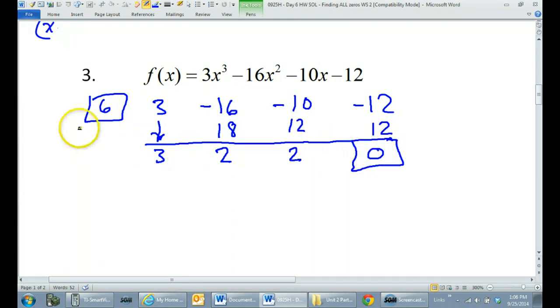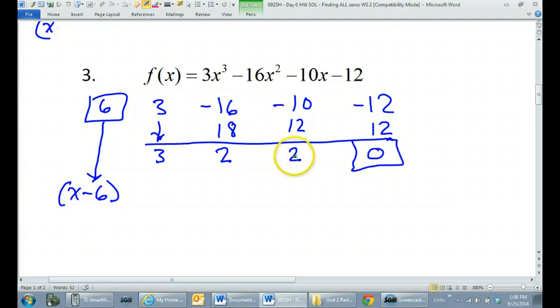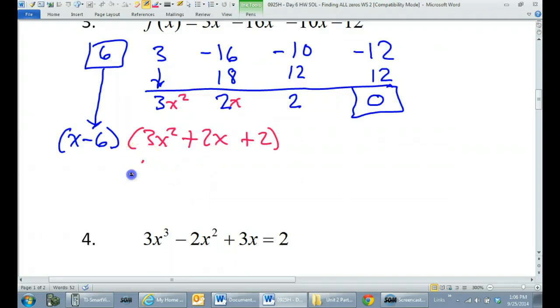We knew that would happen. So, so far, this is what we have. From the zero of 6, we know there will be a factor of x minus 6. Now, if I put the variables back in here, there's an x here, there's an x squared here. That gives me 3x squared plus 2x plus 2. Now, in the last problem, this was not factorable. So, let's see if this one is factorable or not.